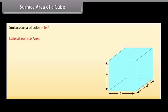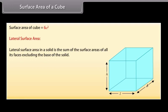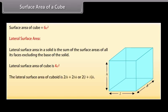The lateral surface area of a solid is the sum of the surface areas of all its faces excluding the base. The lateral surface area of a cube is 4A², and the lateral surface area of a cuboid is 2LH + 2BH, or 2(L + B) × H.